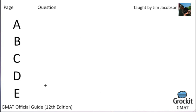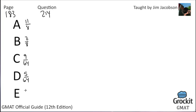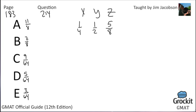Page 183, number 214. Answer choices: 11/8, 7/8, 9/64, 5/64, 3/64. Xavier, Yvonne, and Zelda each try independently to solve a problem. Their individual probabilities for success are 1/4, 1/2, and 5/8 respectively. What is the probability that Xavier and Yvonne, but not Zelda, will solve the problem?